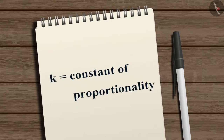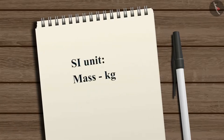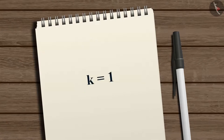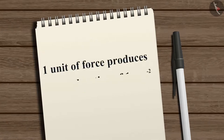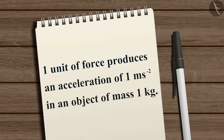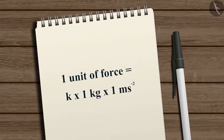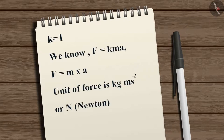Here k is a constant of proportionality. The SI unit of mass is kilogram and acceleration is meter per second squared. The unit of force is chosen such that k becomes one: one unit of force is the amount of force that produces an acceleration of one meter per second squared in an object of one kilogram mass. Thus k = 1, and we can write force as mass multiplied by acceleration. The unit of force is kilogram meter per second squared, or newton, represented by the symbol N.